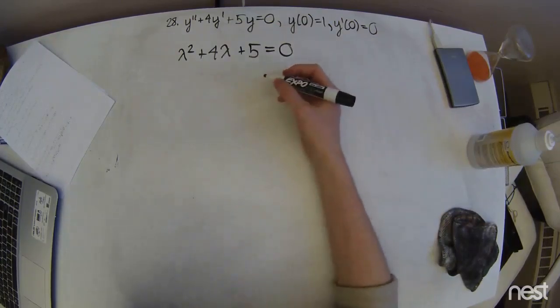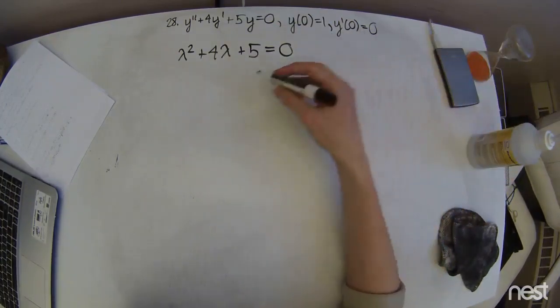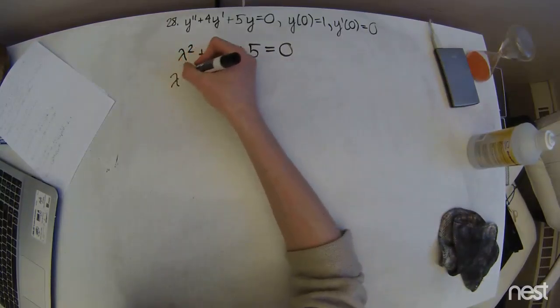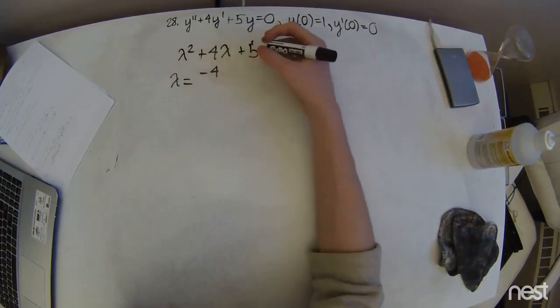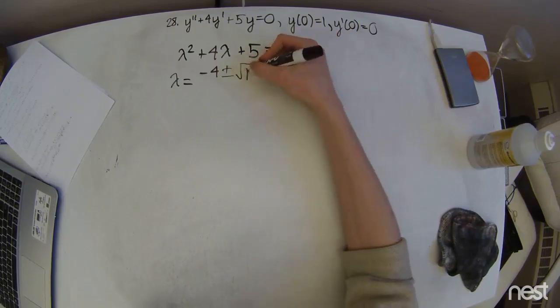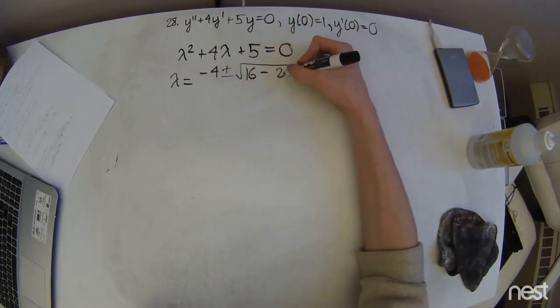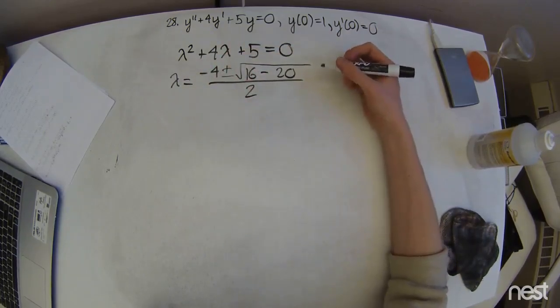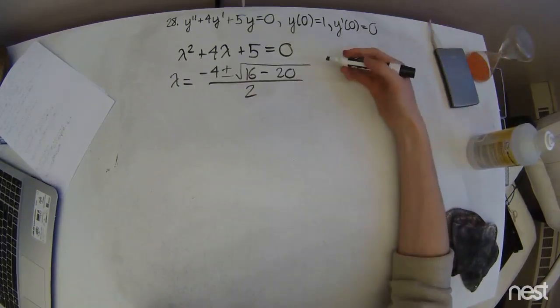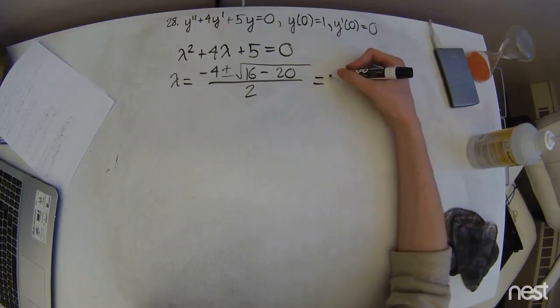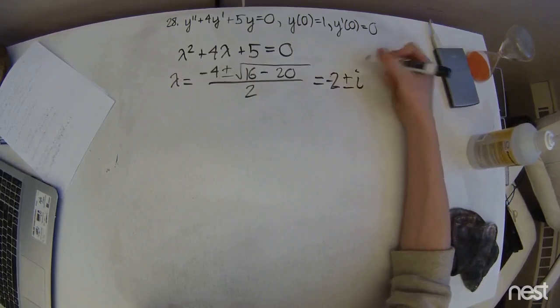Now we get the roots of this equation with the quadratic formula since there's not really a good factoring for this. So we're going to get lambda equals negative 4 plus or minus square root of 16 minus 20 over 2. And since 16 minus 20 is negative, this is going to give us complex roots, and those roots are going to be negative 2 plus or minus i.